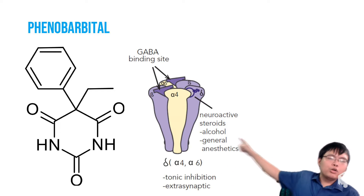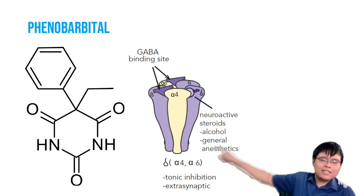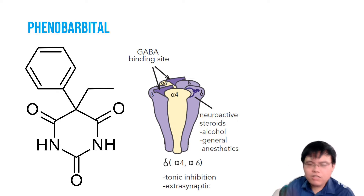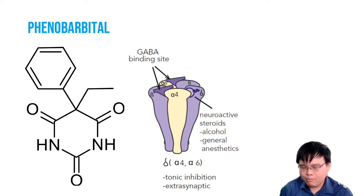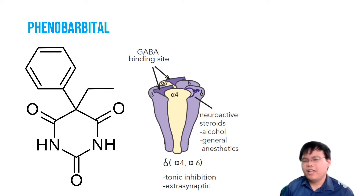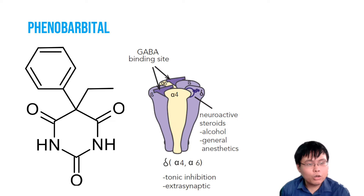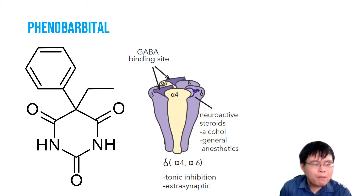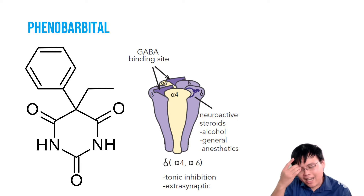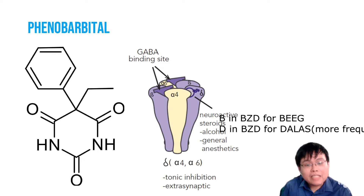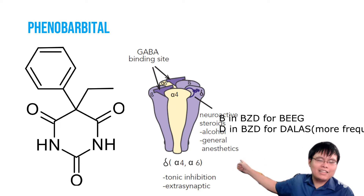Phenobarbital prolongs the opening of the chloride ion channel, so chloride goes in, depresses the CNS — CNS depression. That's how it works. For benzos, 'B' stands for 'big' — benzos make the chloride ion channel bigger. Phenobarbital: tagal. Benzos: big.